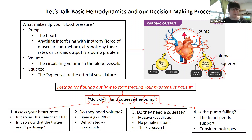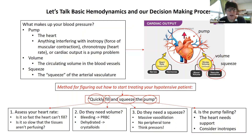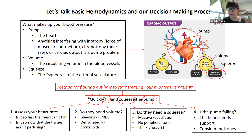Let's say your patient's hypotensive but their heart rate is normal — it's 90. You say, alright, I know that's not the problem. Now move to step two: 'fill.' Do they need any volume? Are they bleeding or at risk for bleeding? Are they dehydrated? Do they potentially need fluid resuscitation? That's where you're assessing your fluid status — heart rate's okay, now assess fill.